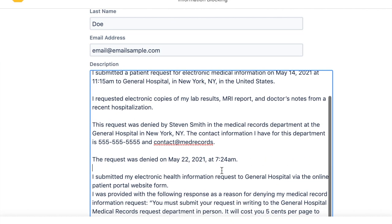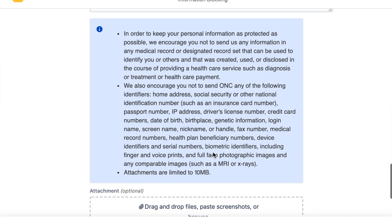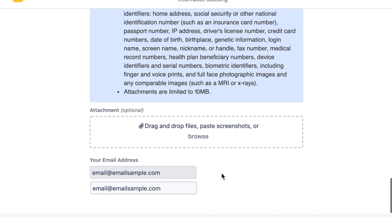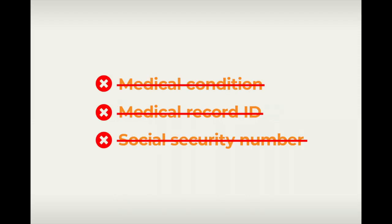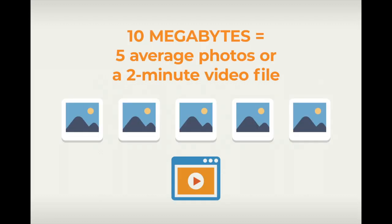Be sure to review the description one more time to make sure it says what you want it to say. Health and Human Services also allows you to attach other files to help support your report of information blocking. Attachments you may consider including could be text copied and pasted from an email into a text document like Word, or screenshots from your computer. Remember, do not share any personal health information or personal identification information such as your home address or your social security number. Attachments cannot exceed more than 10 megabytes in file size.